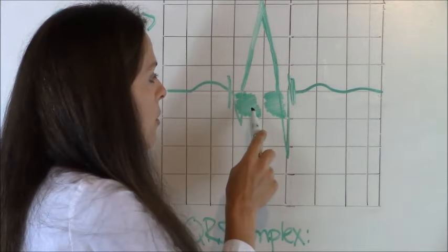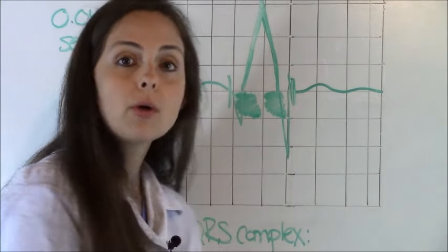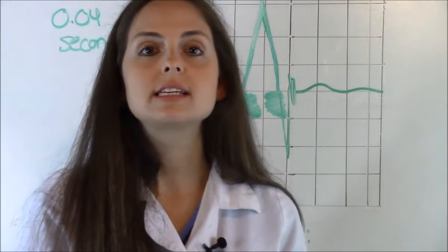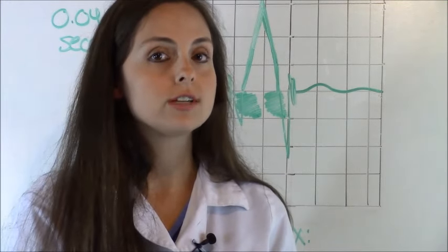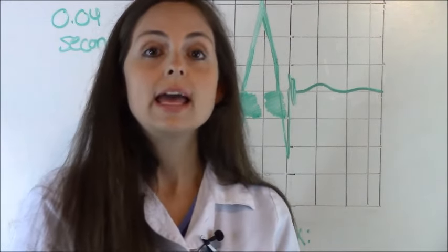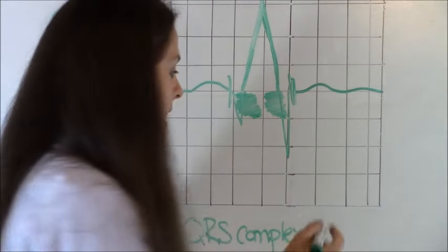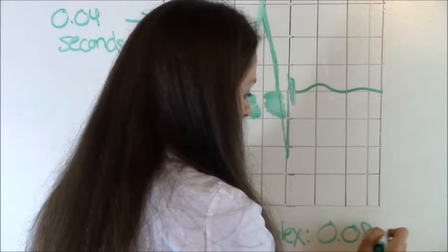And right here, we have one, two, we have two boxes. And like I said, each box represents 0.04. So 0.04 times two is 0.08. So that is the measurement of our QRS complex.